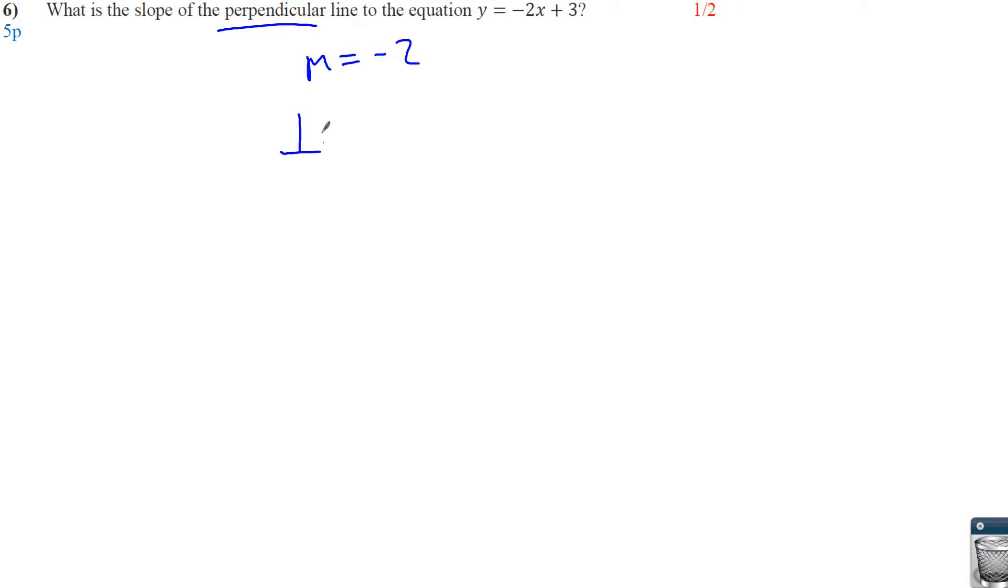But for a perpendicular line, it's going to be the opposite reciprocal. So it was negative, now it's positive. And it was 2 over 1, so now it's 1 over 2. So that's why it's 1 half or 0.5.